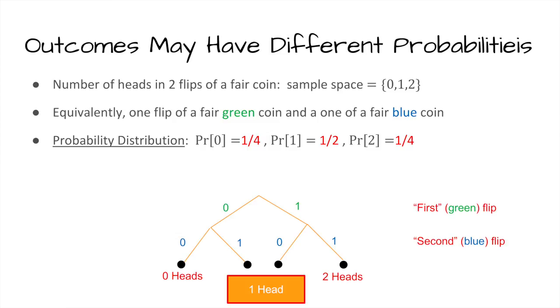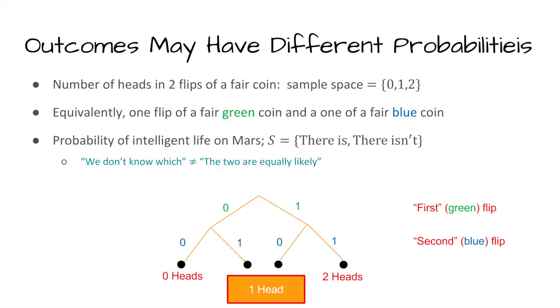We need the notion of a probability distribution: a list, for each possible outcome, of how probable it is — numbers between zero and one that sum to one. Note that sometimes we have no way of knowing which outcome is the case, and that doesn't mean they're equally likely. For example, we might talk about the probability of intelligent life on Mars: either there is or there isn't, but given all we know about life, they will not have equal likelihood.